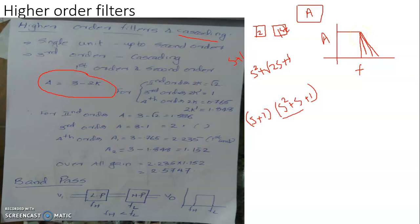As the order of the filter increases, a more ideal filter response is obtained, with a roll-off approaching 18 dB per decade increment and beyond. However, practically this improvement is limited by power rating and circuit complexity. In practice, higher order filters generally have an order of up to 3 or 4. This concludes the discussion of low pass filters, high pass filters, and cascading of filters to obtain a more ideal filter response.